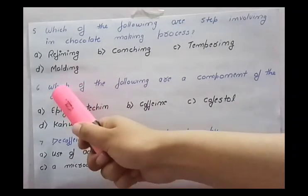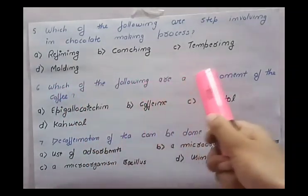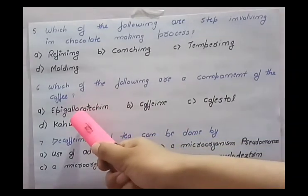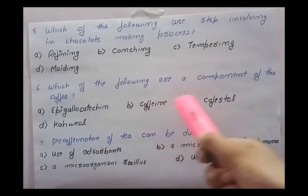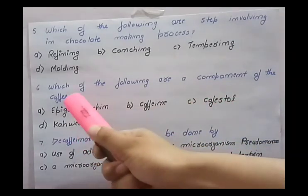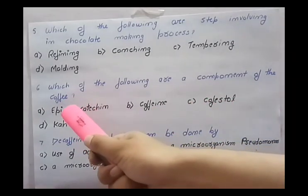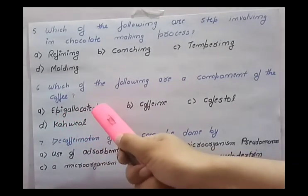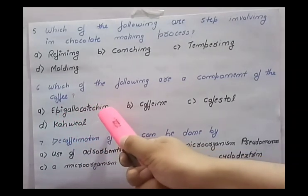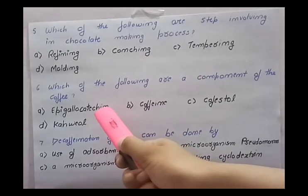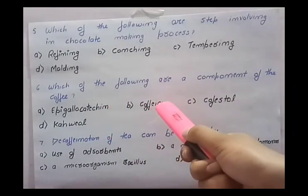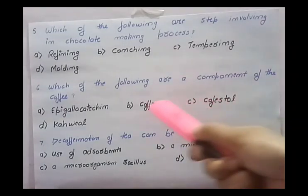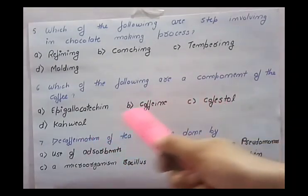Next question: which of the following are components of coffee? The options given are epigallocatechin, caffeine, cafestol, and kahweol. First option — epigallocatechin — it is not present in coffee; it is present in tea. Second option — caffeine — yes, it is present in coffee; it is a stimulating compound.